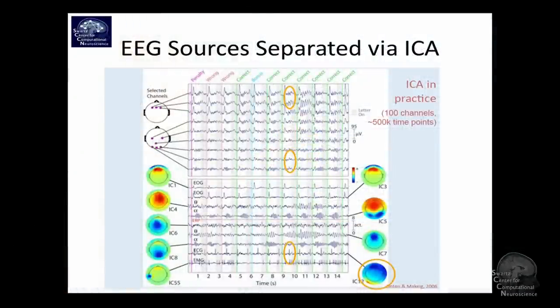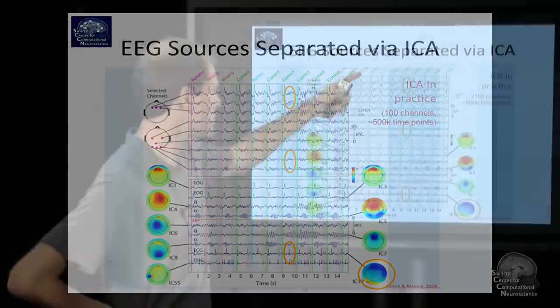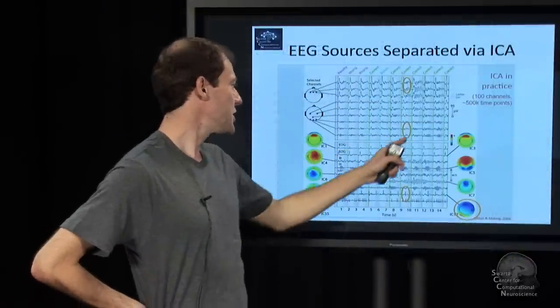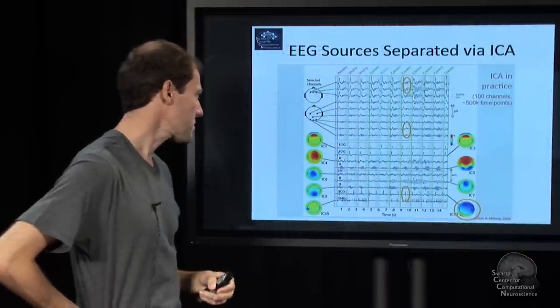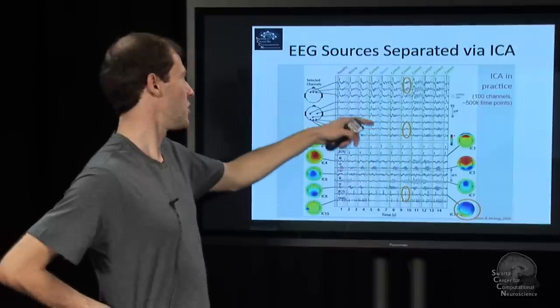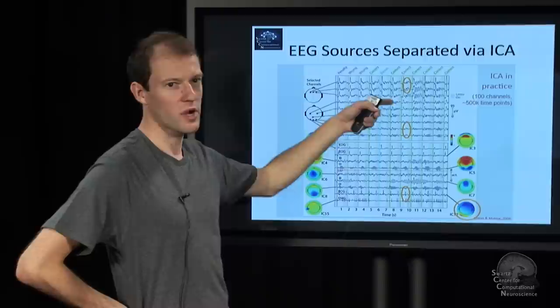The raw EEG looks somewhat like this on multiple channels—a couple of occipital channels, a few central channels, and so on. It's very much the same signal. You see a spike here in many channels. The oscillations show up in multiple channels, although they are slightly weighted differently.